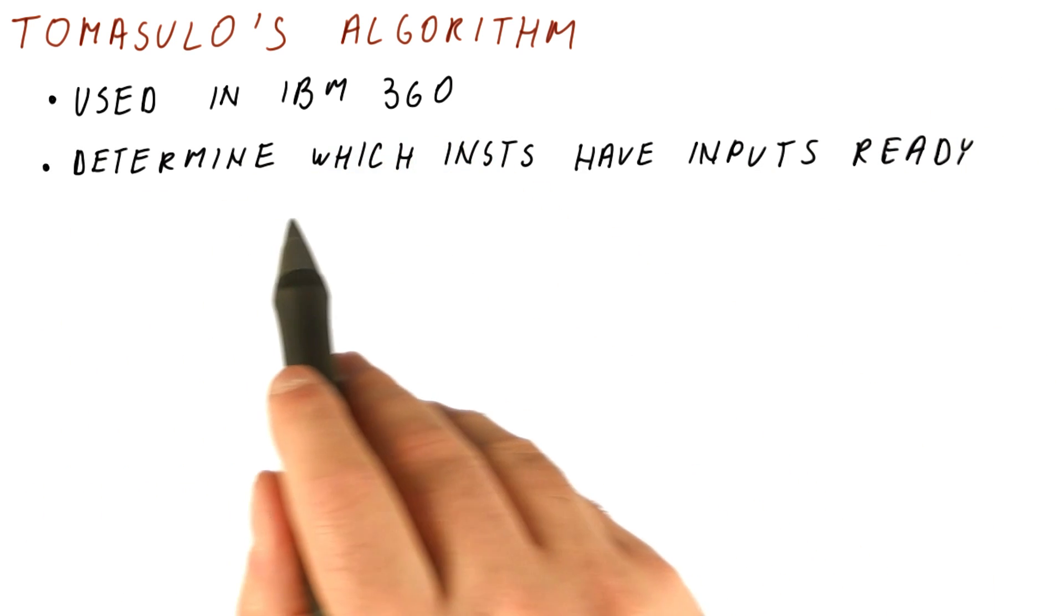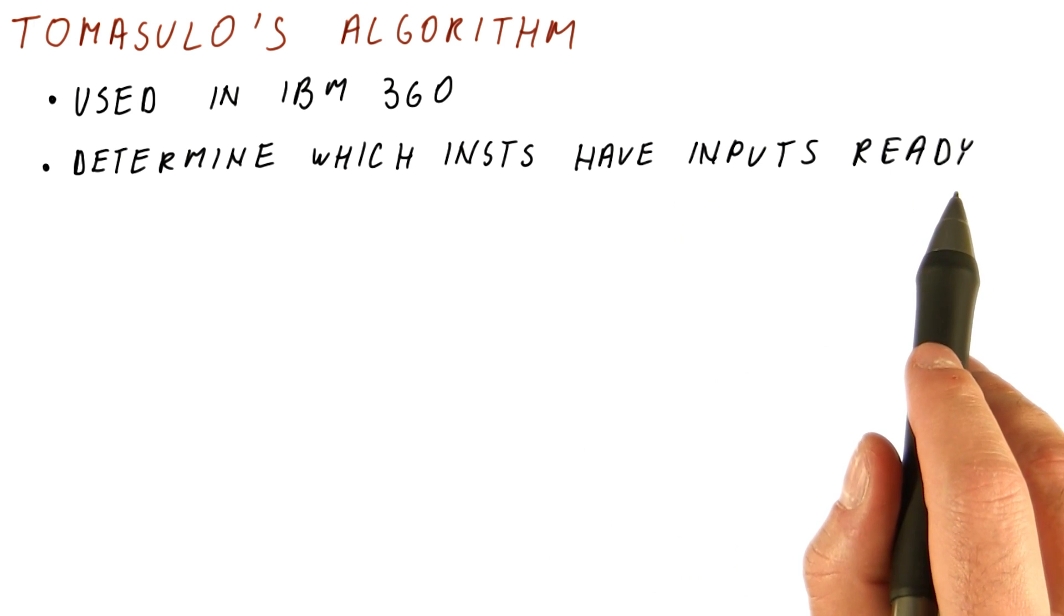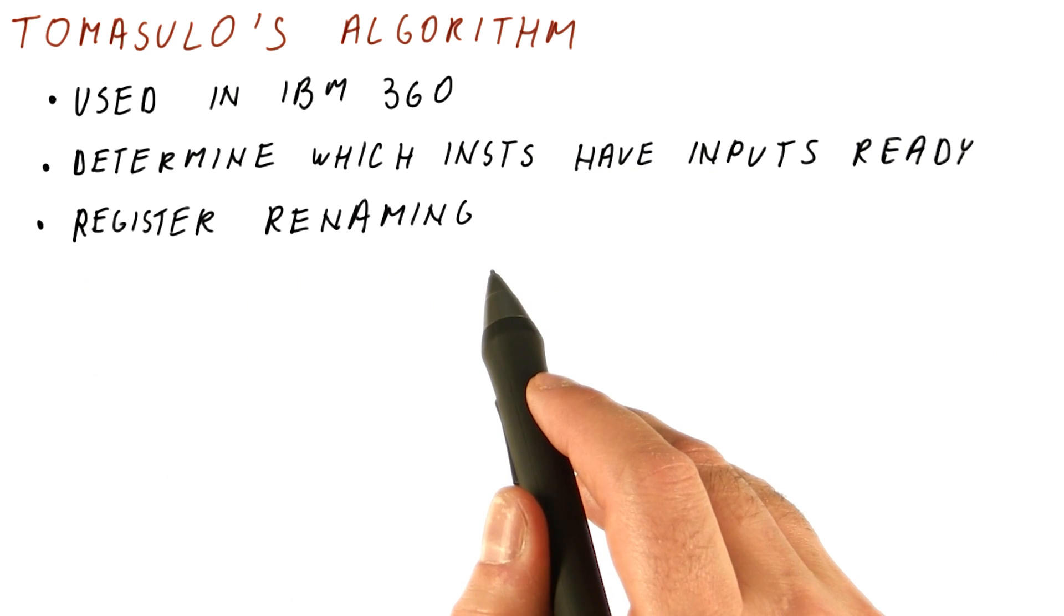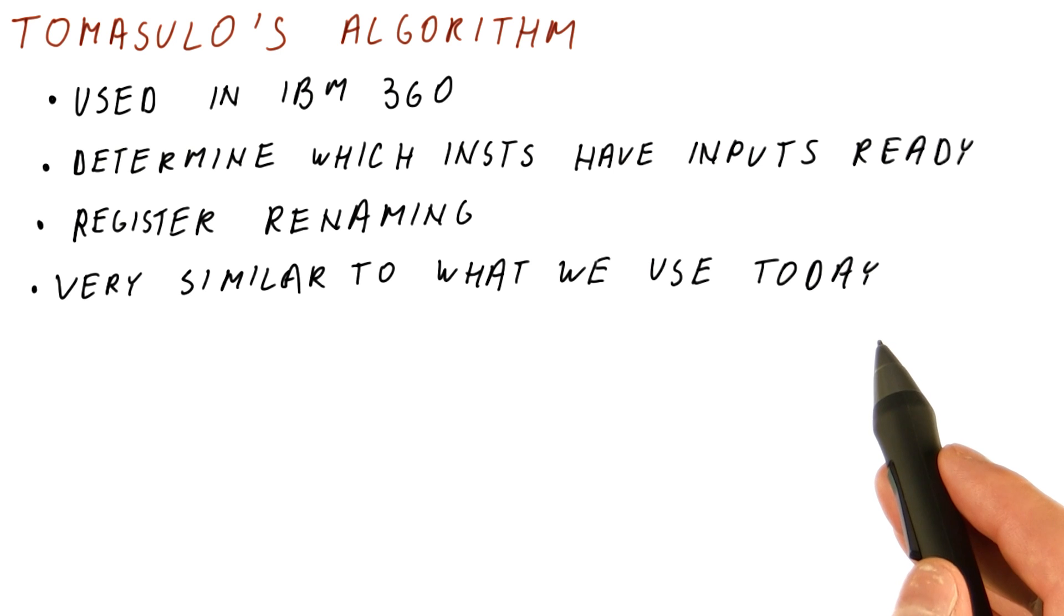What it does is determine which instructions have inputs ready so they can go in the next cycle and which instructions still have to wait for their inputs to be produced. It also includes a form of register renaming and is surprisingly similar to what we use today for out-of-order execution.